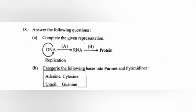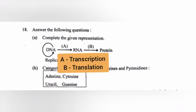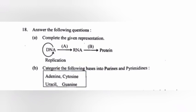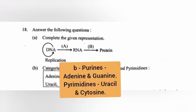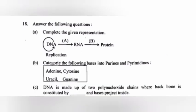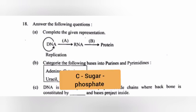Question 18: a) Complete the given representation: transcription and translation. b) Categorize the following bases into purines and pyrimidines. Answer: purines – adenine and guanine; pyrimidines – uracil and cytosine. c) DNA is made up of two polynucleotide chains where the backbone is constructed by sugar phosphate and bases project inside.